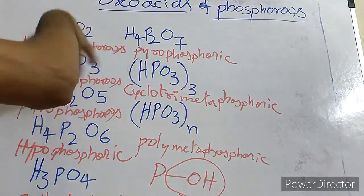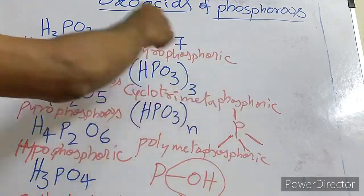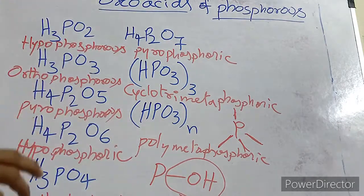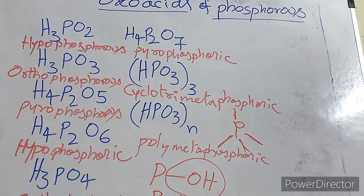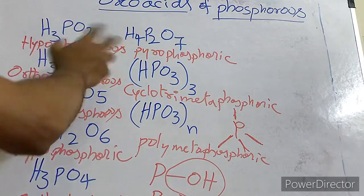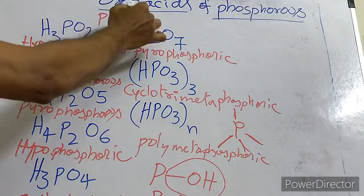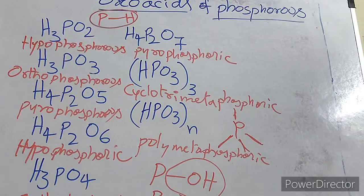All the groups are tetrahedrally surrounding the phosphorus. If I have a phosphorus, you should have four bonds — all surrounded to the phosphorus tetrahedrally. So phosphorus is surrounded by groups like hydrogen, oxygen, or OH bonds, all arranged tetrahedrally. Most of these acids contain P-OH bonds and P=O (double bond) bonds. Whenever you write a structure, remember these two types of bonds.